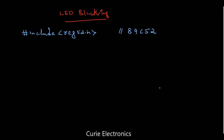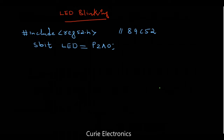Then we have to define the variables. We are going to use the port 2 pin 0. I will write: sbit led = P2^0. This is a single bit — one pin we are going to use. The meaning of this: we are connecting the LED to port 2 pin 0. So whatever we do, if we make led equal to 1, our port 2 pin 0 is going to be 1. If led equals 0, port 2 pin 0 is going to be 0.